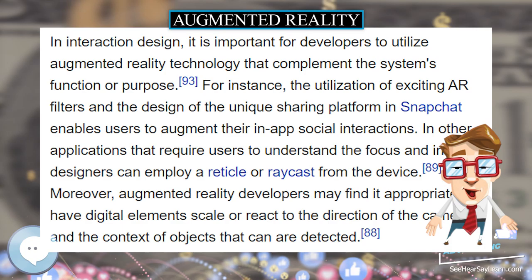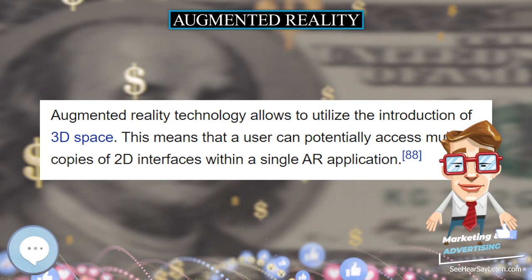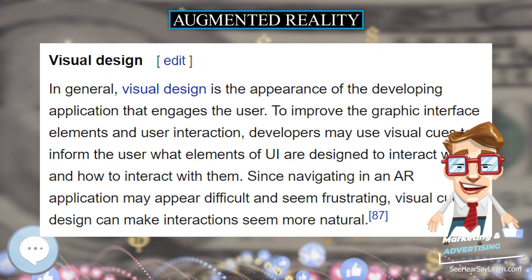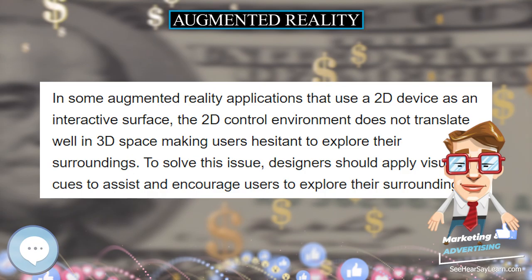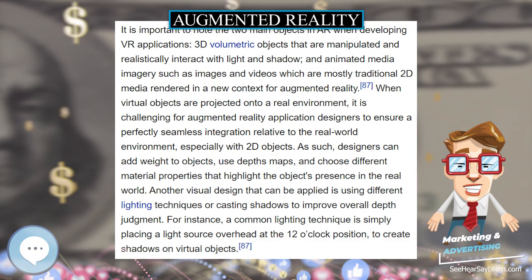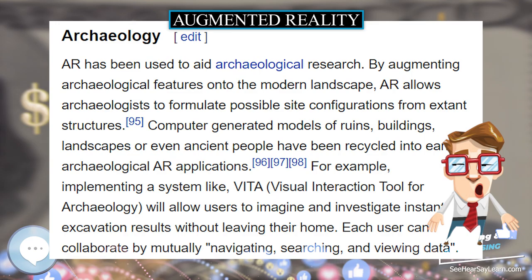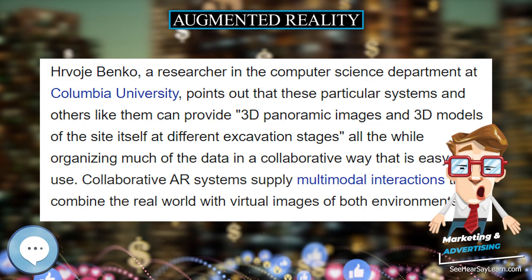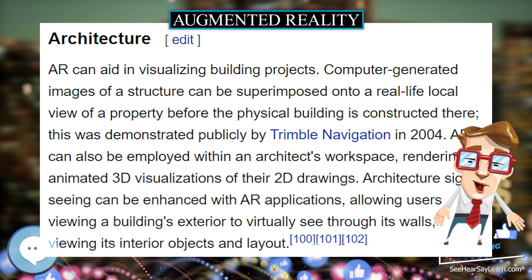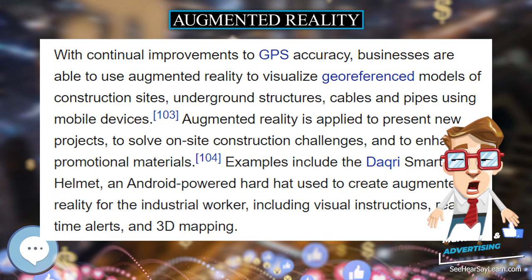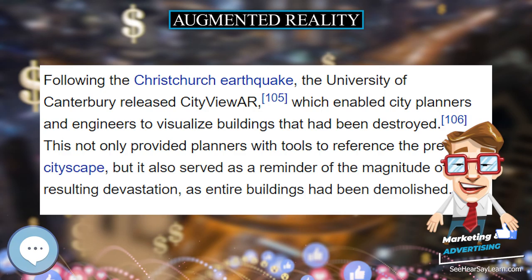Various technologies are used in augmented reality rendering, including optical projection systems, monitors, handheld devices, and display systems worn on the human body. A head-mounted display (HMD) is a display device worn on the forehead, such as a harness or helmet. HMDs place images of both the physical world and virtual objects over the user's field of view. Modern HMDs often employ sensors for six degrees of freedom monitoring that allow the system to align virtual information to the physical world and adjust accordingly with the user's head movements. HMDs can provide users with mobile and collaborative experiences; specific providers such as uSense and Gestigan include gesture controls for full virtual immersion.